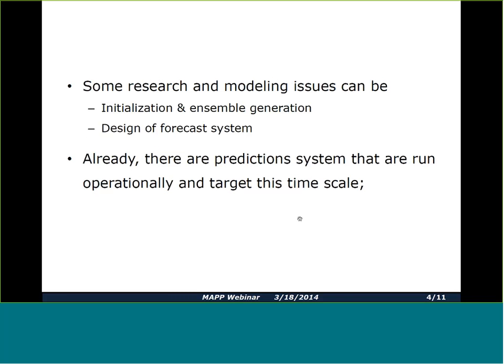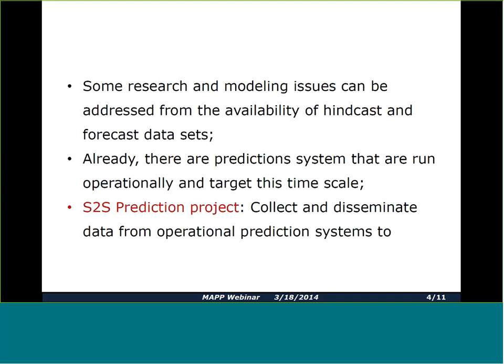Some of the research and modeling issues could be addressed if you have a multi-model dataset which could be used to look at these issues, both in research and in terms of designing the forecast system. That's what this S2S prediction project is — an international project coordinated between the World Weather Research Program and World Climate Research Program. It's unique in that it intersects both the weather and the climate community. The concept is to collect data from different operational prediction systems and disseminate it to the research community.